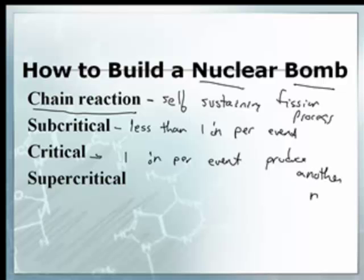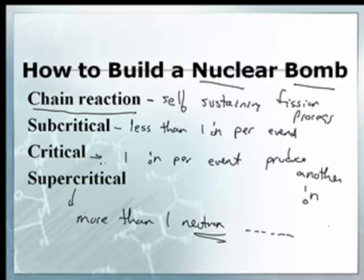Another neutron — so it's just kind of sustaining itself there. Supercritical is when more than one neutron from each event causes more and more reactions. When you have a nuclear power plant, everybody gets worried that it would blow up, but they always have subcritical amounts of fissionable material, so it cannot blow up. Now, it could melt down, but it cannot blow up.